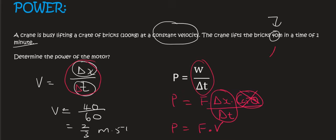Now if you had a question where they didn't give you the distance or the time, they would have given you the velocity. And so we could have just said that the power is equal to force times by the velocity, which is 2 over 3. And the force, we said was equal to mass times gravity, because it's moving at a constant velocity, the force of the motor must be the same as the force of gravity.